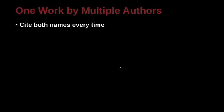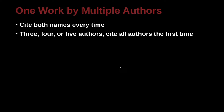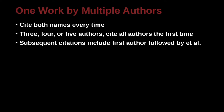What about a work, a journal, or a book that's by more than one person? If there are three, four, or five authors, then the first time that you cite this, you need to include all of the authors. However, the second and following times you cite that, you can include just the first author followed by et al, which means and others.